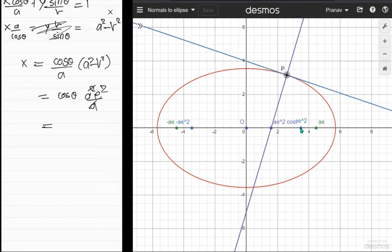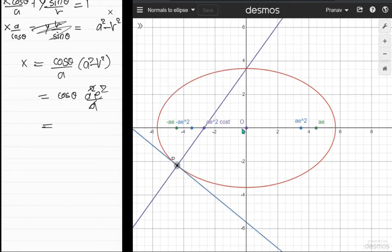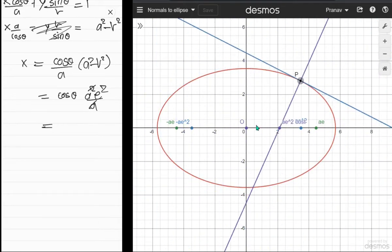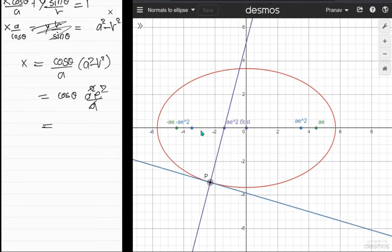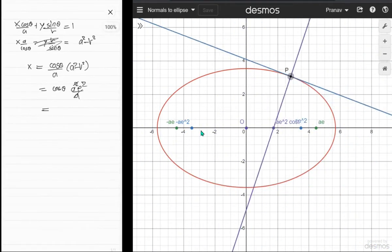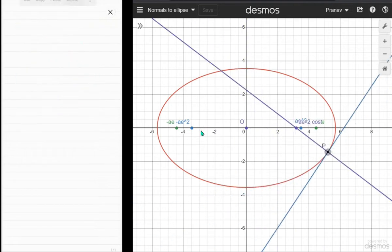equal to ae² and x equal to negative ae². So why do we even care about this? We care about it because if you have a point where you want to